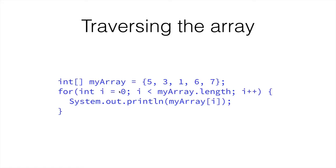So what's happening here is: on i equals 0, we are printing the 0th index of the array, which is the first element, or number 5. On i equals 1, which happens after we increment it, i is still less than the length of the array, which is 5. And we print the first element, or element number 2 — which is number 3. i is 2, we print number 1. i is 3, we print number 6. i is 4, we print number 7. i is 5, then 5 is no longer less than 5, which is the length.